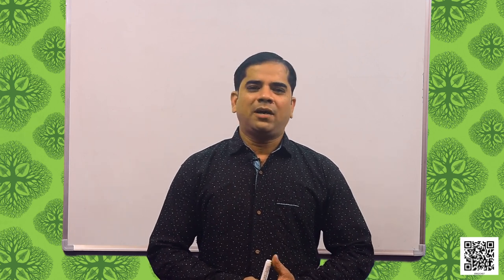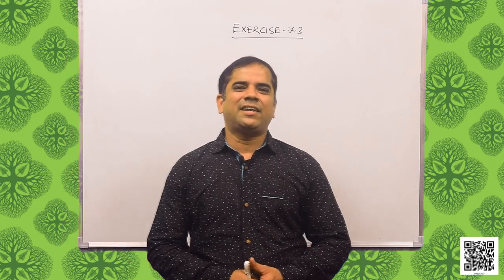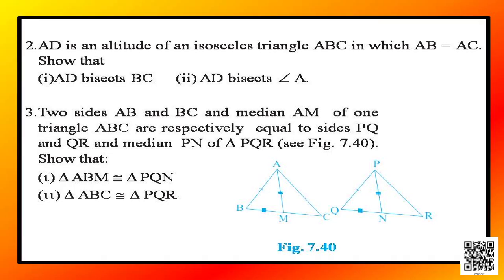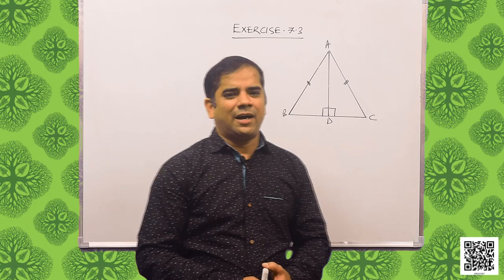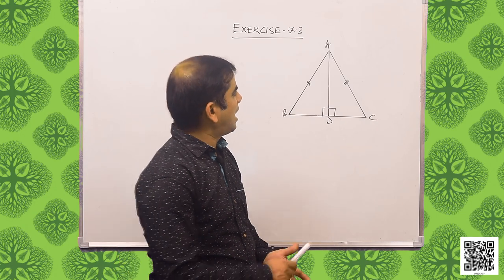Let us discuss question number 2. It says AD is an altitude of an isosceles triangle ABC in which AB is equal to AC. We need to show that AD bisects BC and AD bisects angle A. Let us discuss the solution.